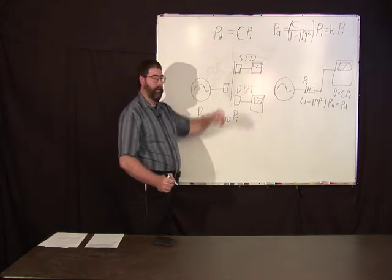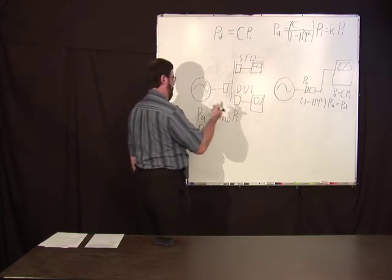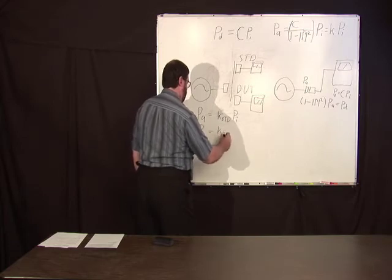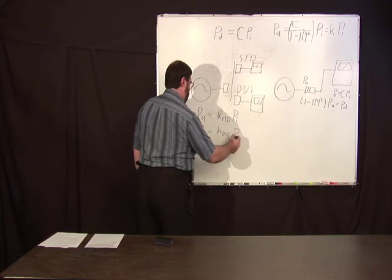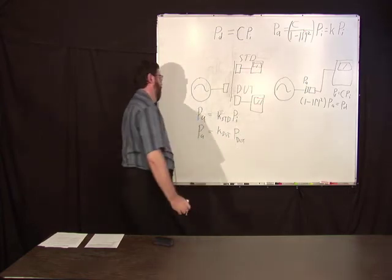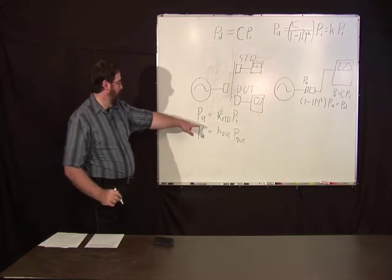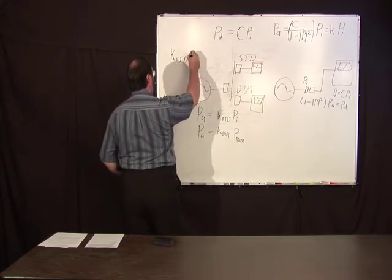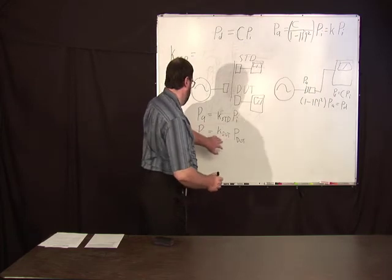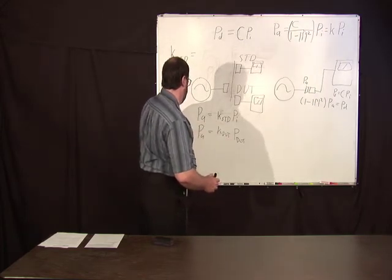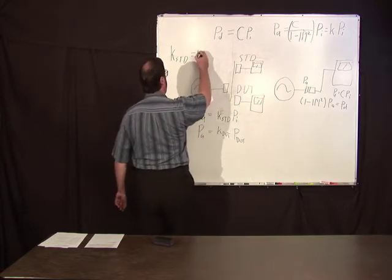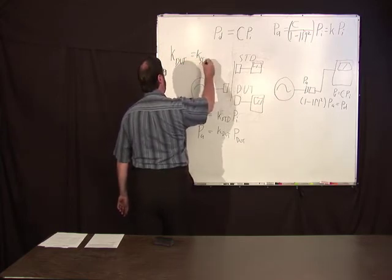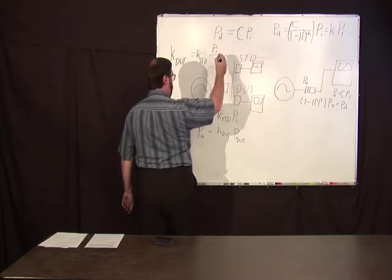Then we put the DUT on there and we measure the available power. We measure some power. It's going to be K dot device under test times P dot. So we can solve between these two. We can solve for this. K dot is K standard times PI over P dot.